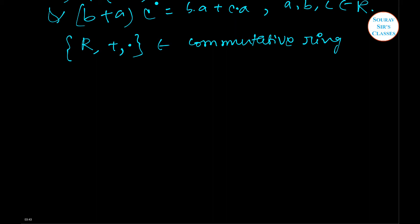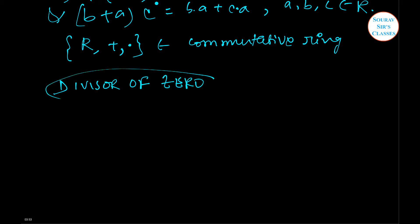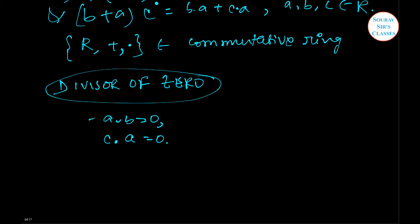It is to be noted there will be a term known as divisor of zero in R. In a ring R, a non-zero element a is said to be a divisor of zero if there exists a non-zero element b in R such that a dot b equals zero, or a non-zero element c in R such that c dot a equals zero. In the first case, a is said to be a right divisor of zero.